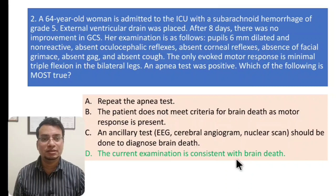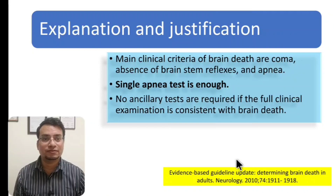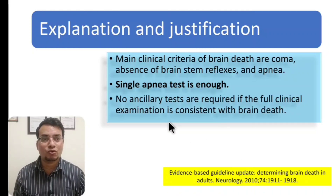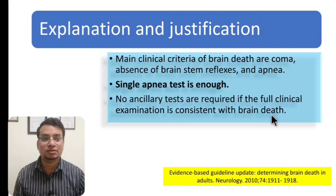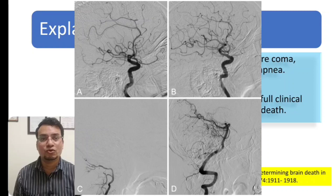The answer is D — the current examination is consistent with brain death, because the patient has no brainstem reflexes and the apnea test has already been performed and is positive. Only one apnea test is enough for diagnosing brain death. The main clinical criteria for brain death are coma, absence of brainstem reflexes, and apnea. Ancillary tests are not required if the full clinical examination is consistent with brain death, except when requested by relatives or if there is controversy between two physicians.